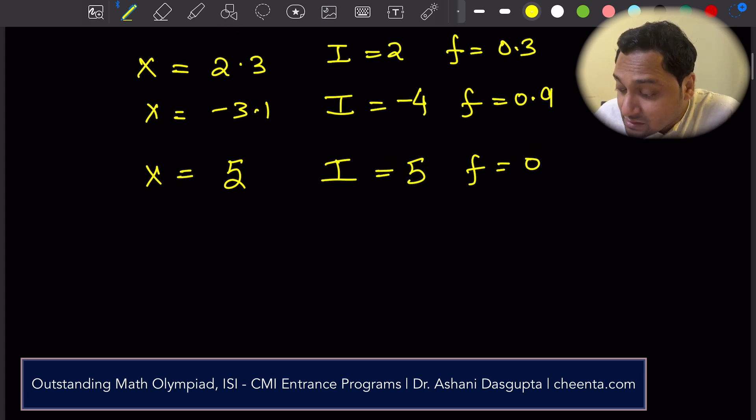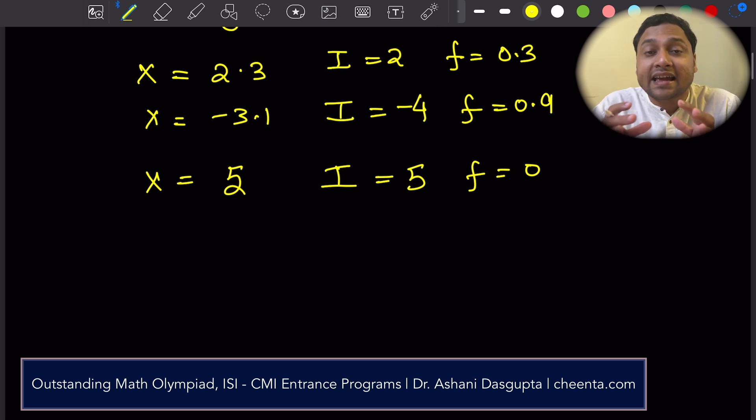So the useful point to remember is that any number x can be written as a sum of its integer part and its fraction part. The fraction part is always greater than or equal to 0. We will use this technique to actually solve this problem.